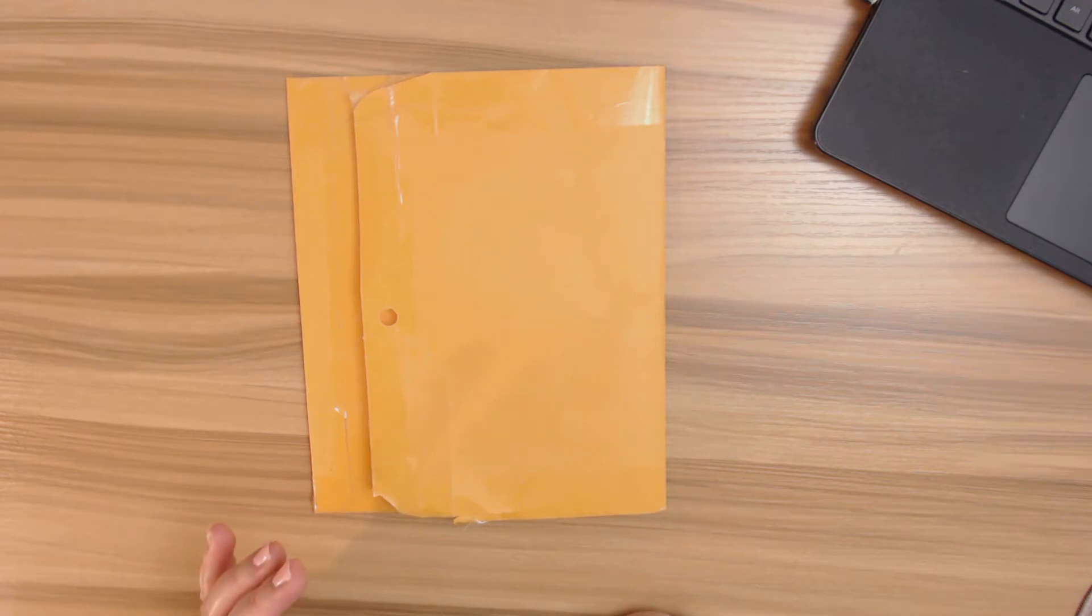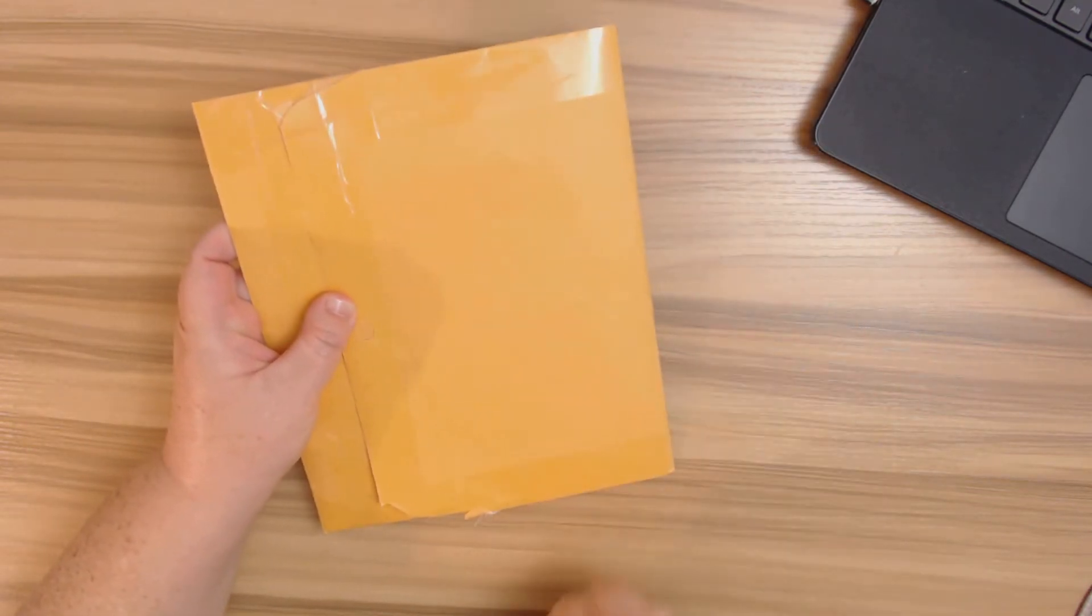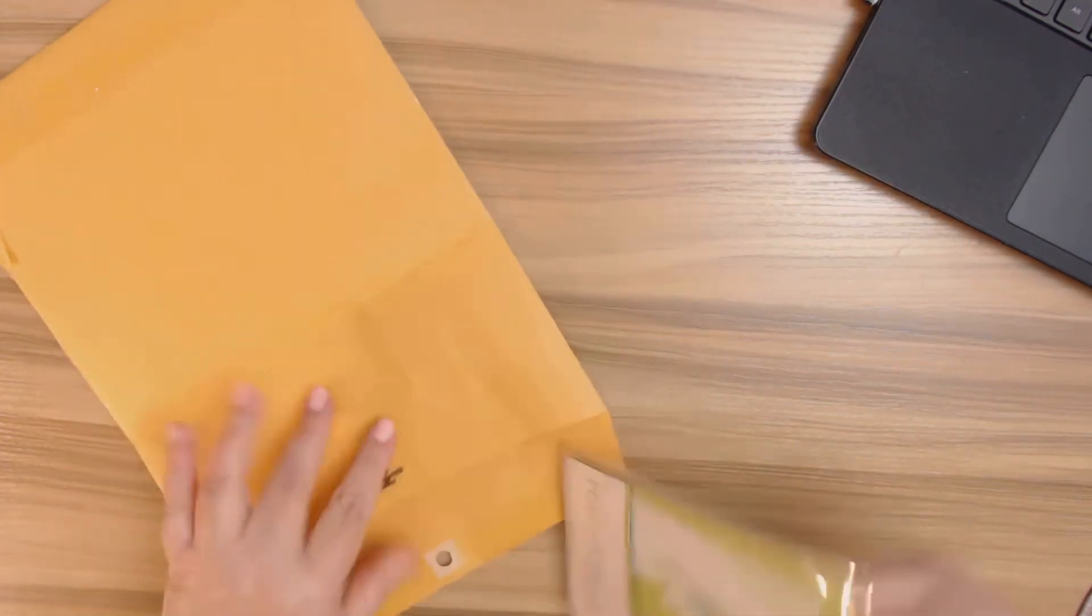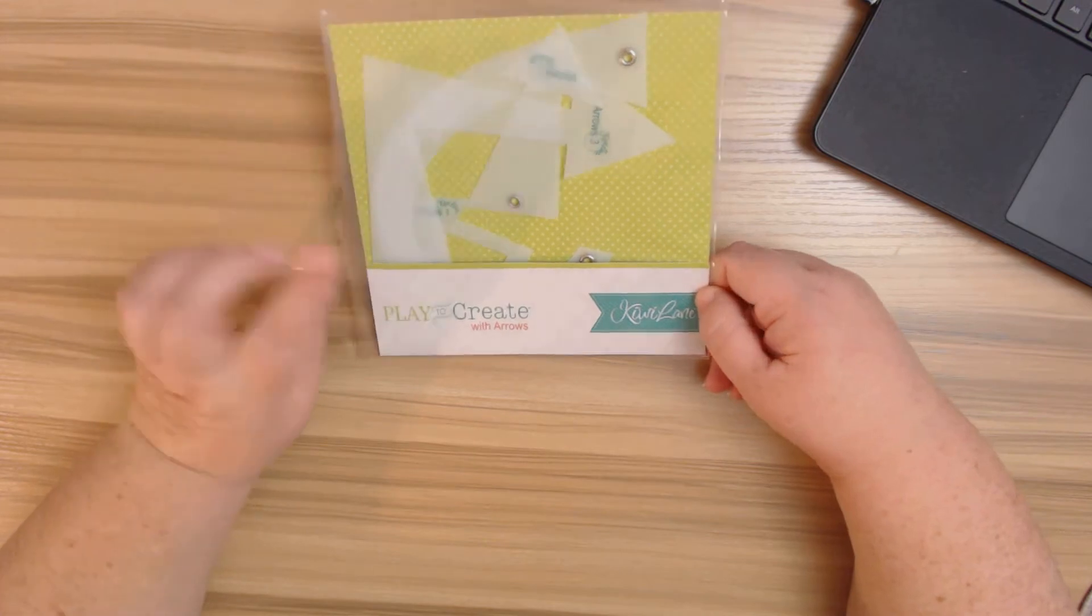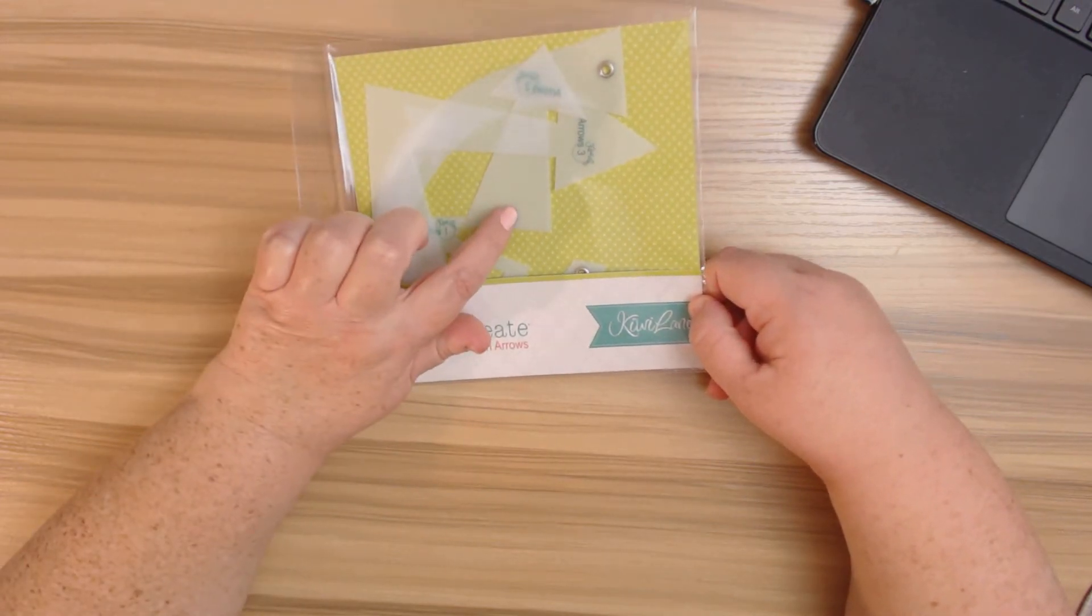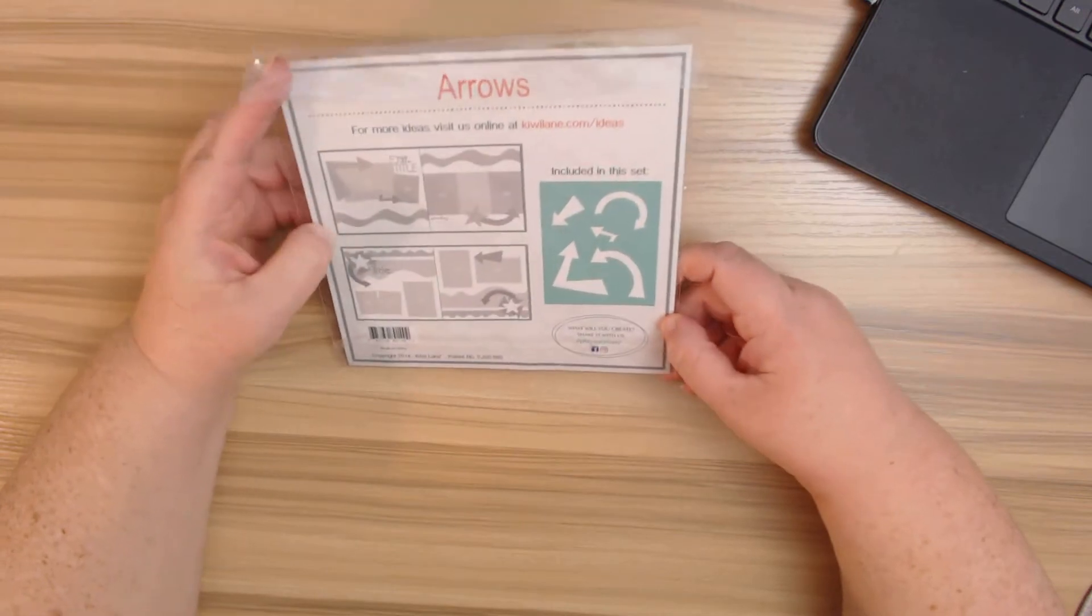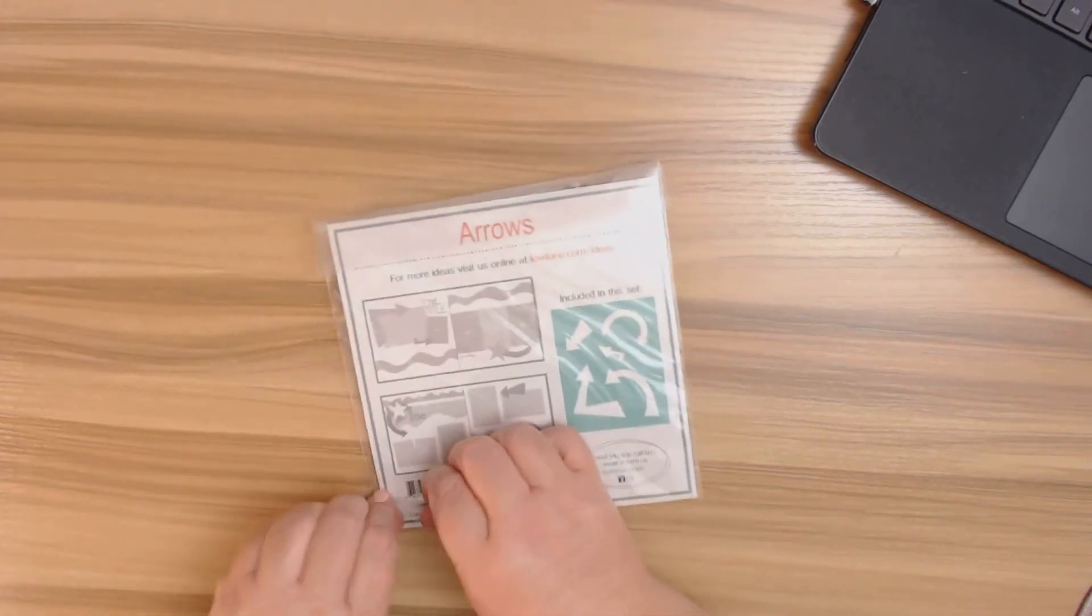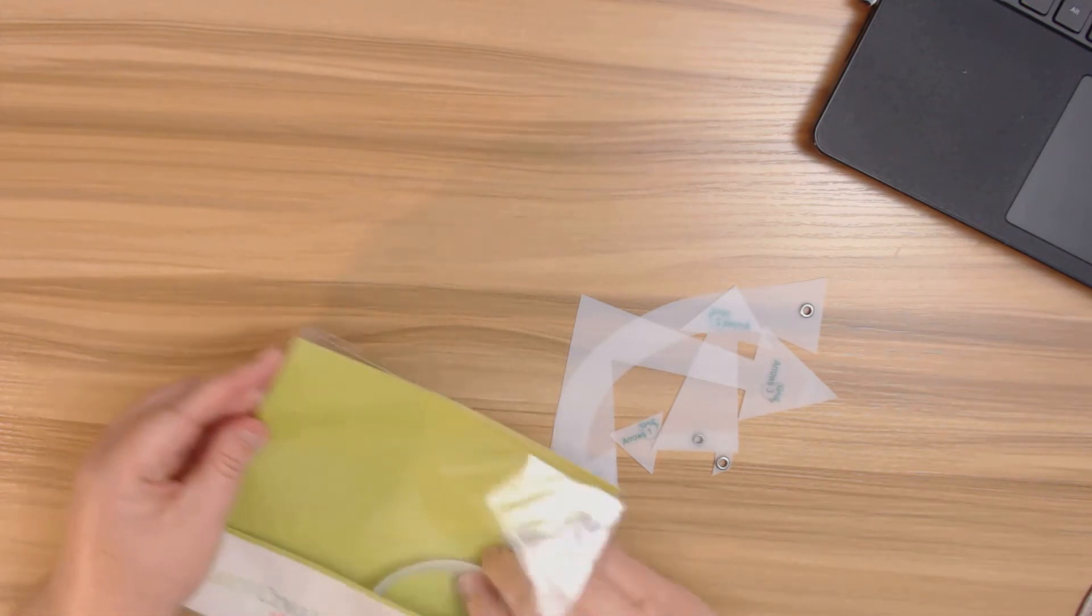Let's get on into what she sent me. Sorry, I went ahead and opened it because let me tell you what, Marissa girl, you seal this up really tight. I have never used any of these type of things before, and first of all I love that you can put these on a little hook. This is called Play to Create with Arrows. It shows you some examples of how to use them and we have some little different shapes here.